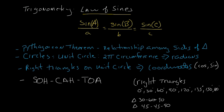We've talked about the Pythagorean Theorem — how it gives us a relationship between the sides of a right triangle, and if you know two sides you can figure out the third. We've also talked about the unit circle, where the circumference is 2π, and from that we can derive the concept of radians and how radians can be used to describe degrees.